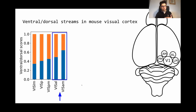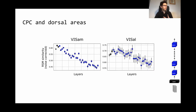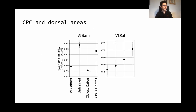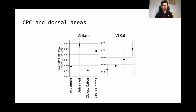However, when we look at two of the most dorsal-type areas in the mouse brain, as we go through the network the similarity actually goes down — meaning the network's processing is getting farther and farther away from what area AM, for example, is doing. So even though the model was good for ventral-type areas, it is not a good model for dorsal areas. Comparing with baselines, the model even performs worse than an untrained model, so the training is not helping for this part of the brain.